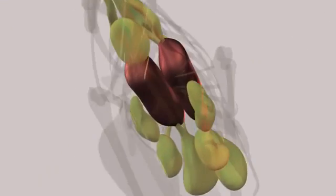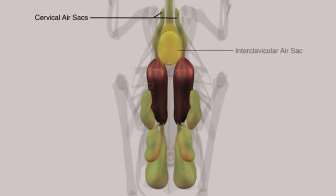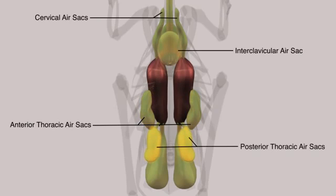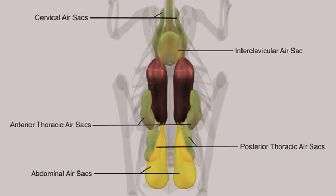These air sacs include a pair of cervical sacs, a single interclavicular sac, a pair of anterior thoracic sacs, a pair of posterior thoracic sacs, and a pair of large abdominal sacs.